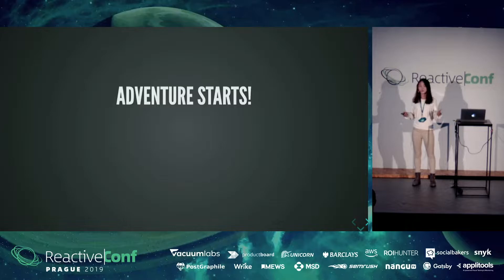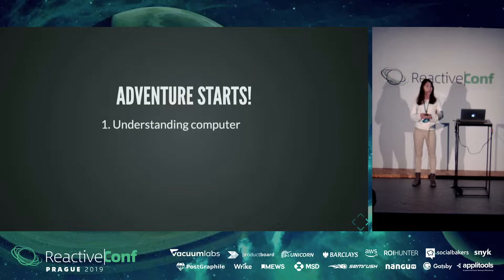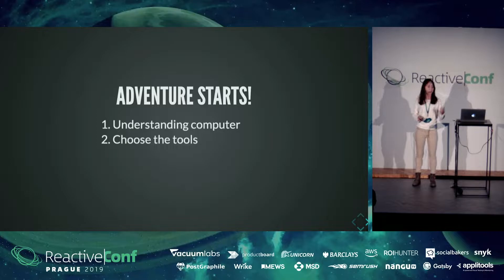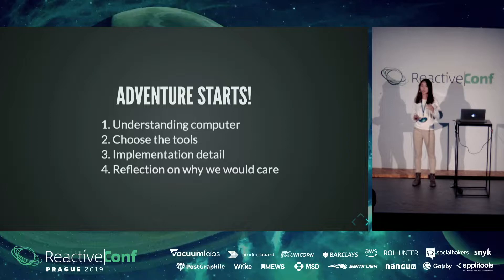And today, we will be following four steps to go through our story. First, we will try to figure out what is this thing we are trying to emulate. Then, we will choose the tools that can help us actually build this emulator. Step three, we will dive into a little bit of detail on how we actually implement this thing. Finally, we will do a brief reflection on why we care about how a computer works.